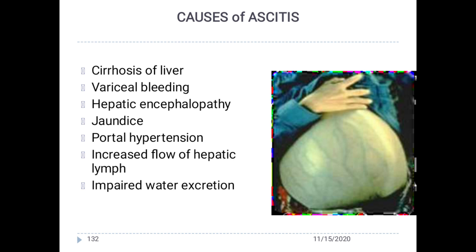The causes of ascites include cirrhosis of the liver, variceal bleeding, hepatic encephalopathy, jaundice, portal hypertension, increased flow of hepatic lymph, and impaired water excretion.